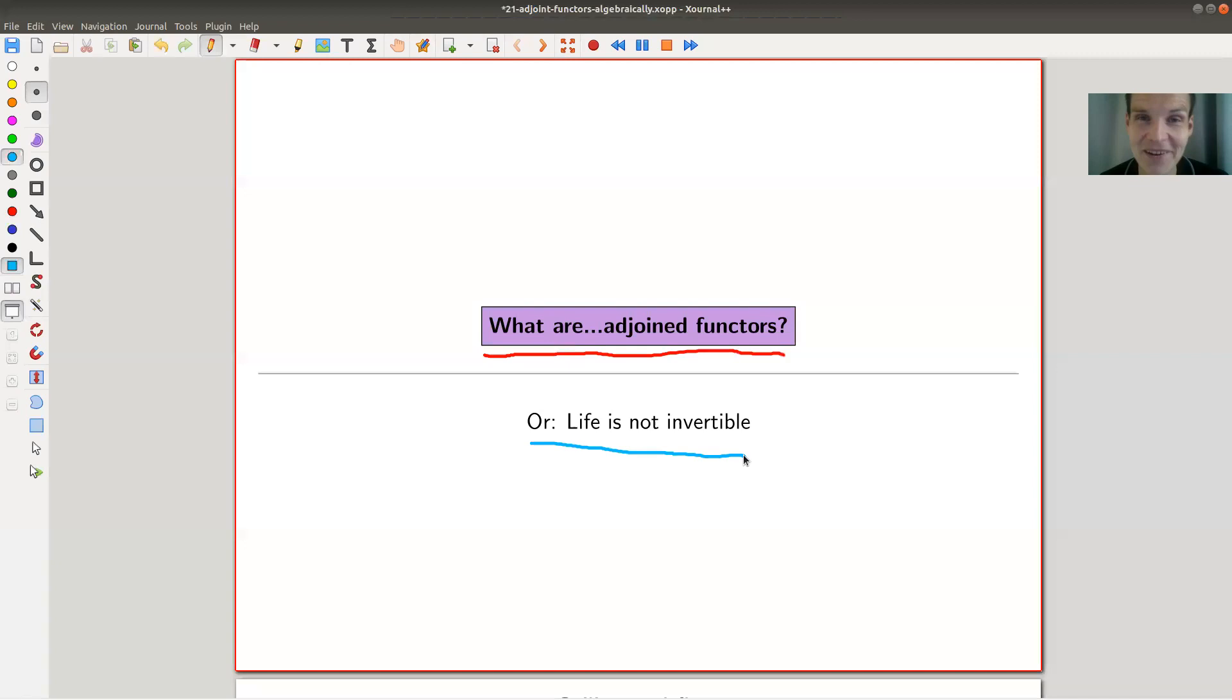And adjoint functors are a little bit like that. Life is not invertible. So adjoint functors are also not invertible. So let's actually have a look at this.